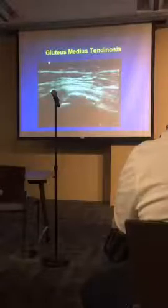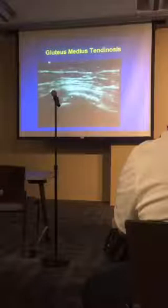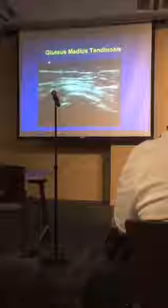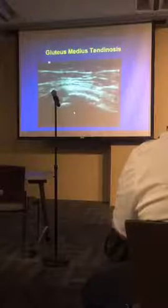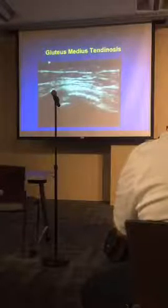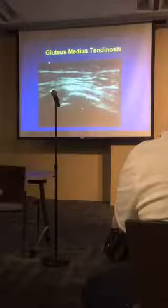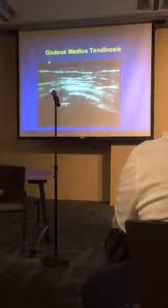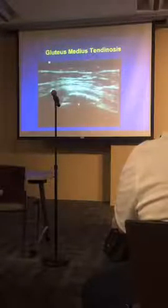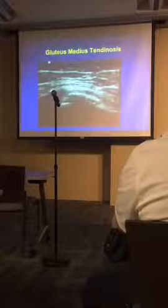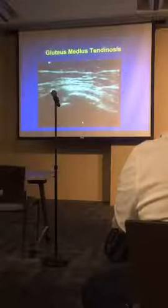Larger calcifications appear as echogenic structures with posterior acoustic shadowing — the calcification reflects and also absorbs the beam, so you lose information behind it. An example in the gluteus medius at the hip shows the calcification creating a gap in the apparent bone surface of the greater trochanter — not a real gap, but the calcification absorbing the ultrasound beam. Posterior acoustic shadowing is a hallmark of calcifications.